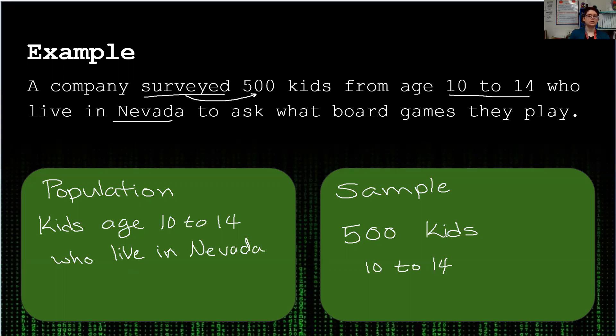Now we could say all kids in the US, all kids in the world, but in the next video that looks at biased and unbiased, you can see why this would not be a good sample population, just kids in Nevada, to represent just the US or the whole world. So our best answer are kids 10 to 14 who live in Nevada.